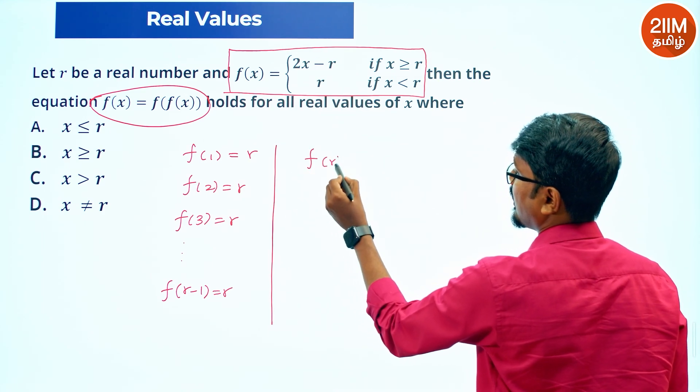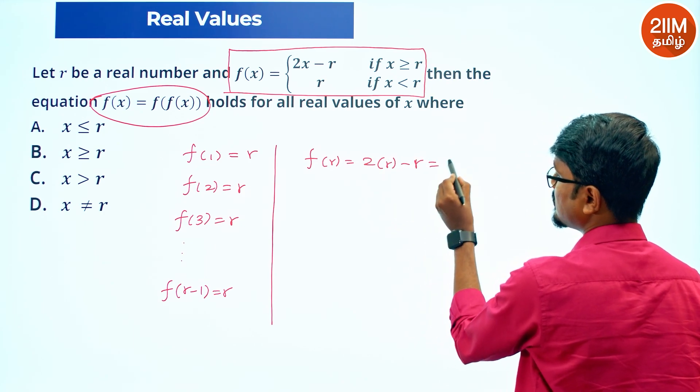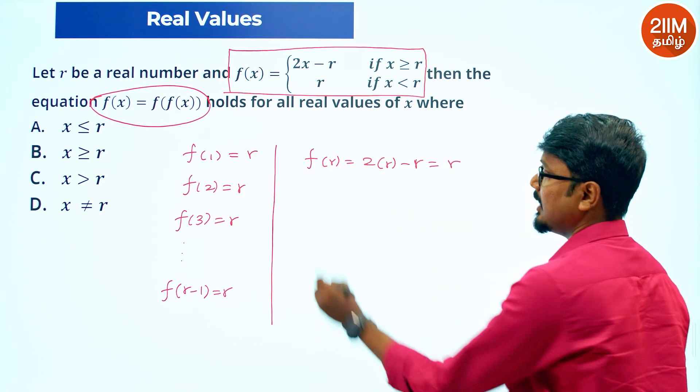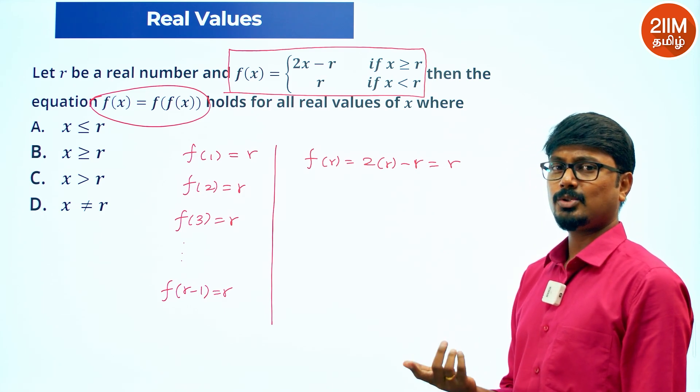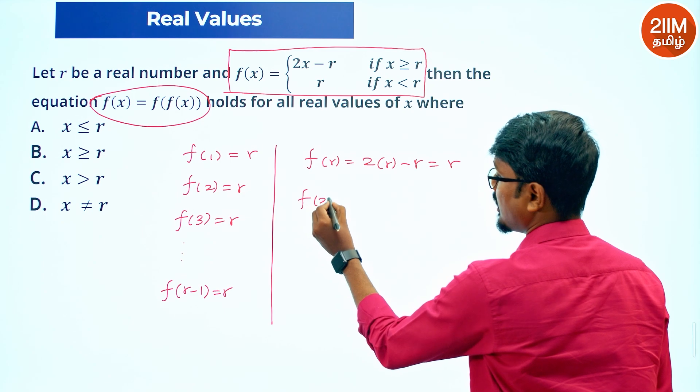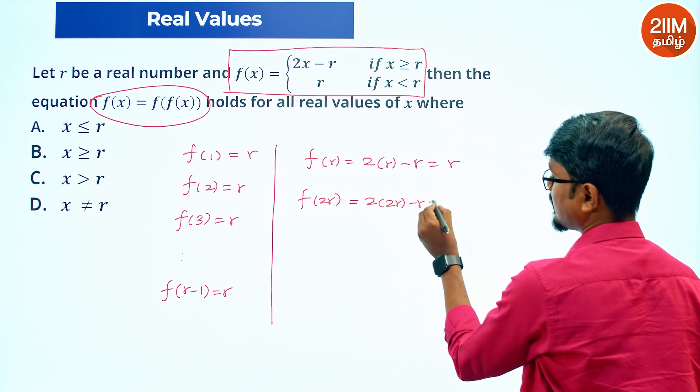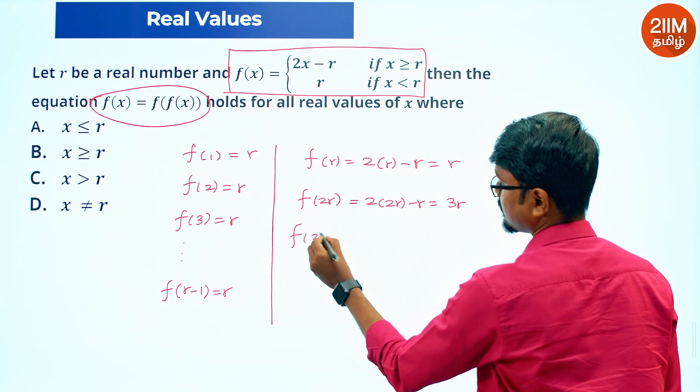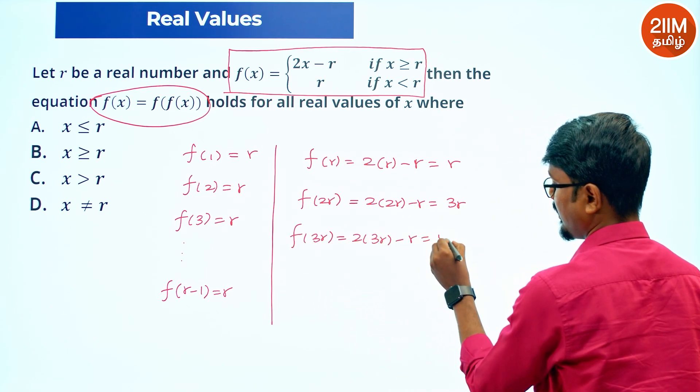So f of r equals 2 times r minus r, which is r. f of r plus 1 equals r plus 2. So f of 2r equals 2 times 2r minus r, which is 3r. f of 3r equals 2 times 3r minus r, which is 5r. And it keeps going.